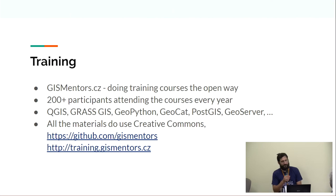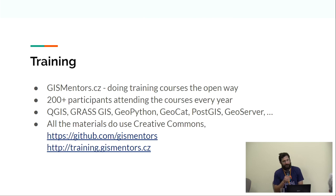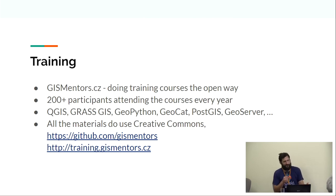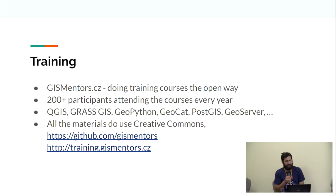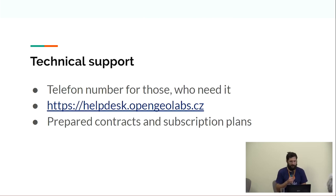What we have done so far: we have a GIS Mentors web page under this trademark. We would like to share the trademark with you guys as well — GIS Mentors — so that we can offer public training courses. We do it the open source way, the open way, meaning all training courses are on GitHub using a Creative Commons license. The training materials are generated and can be found on training.gismentors.cz, mostly in Czech of course since we are focused on the region, but there are some English materials already being translated. Every year we have more than 200 attendees at our workshops — so more than 200 new people being educated in open source geospatial software, which is not bad for a country with 10 million inhabitants altogether.